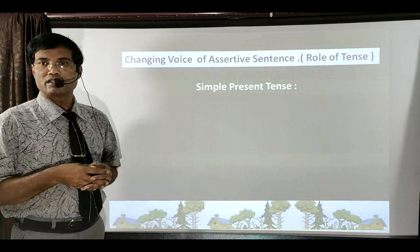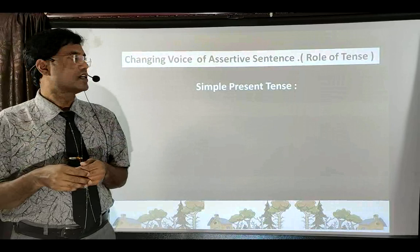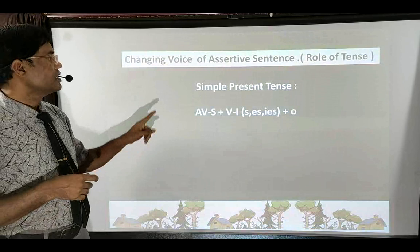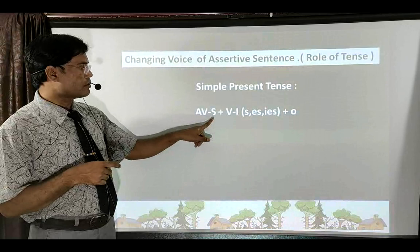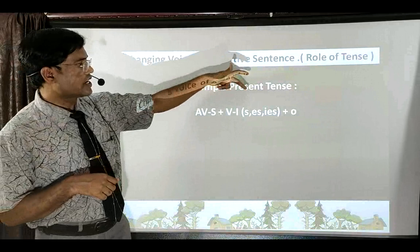First, let us discuss Simple Present Tense. You can revise tenses alongside learning voice — no need to study tense separately. The active voice formula for Simple Present Tense is: Subject + first form of verb (with 's/es' added for third person singular number noun or pronoun as subject) + Object.